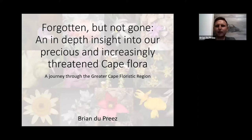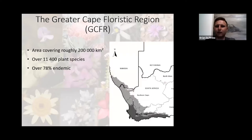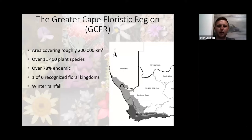The Cape Floristic region is a relatively small area of roughly 200,000 square kilometers, but within this area we have over 11,400 species, of which 78% occur nowhere else in the world. And this is quite an incredible statistic.